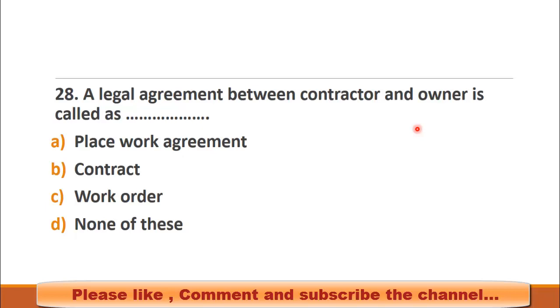MCQ number 28: A legal agreement between contractor and owner is called — choices are: a) piece work agreement, b) contract, c) work order, d) none of these. The right choice for this question is b) contract.